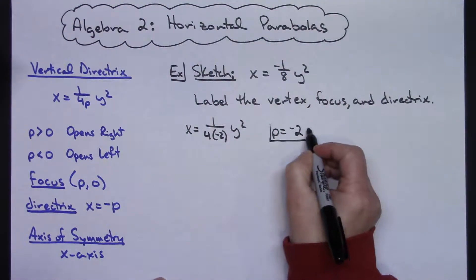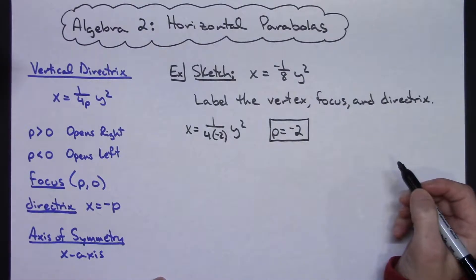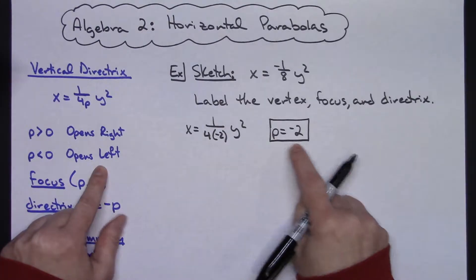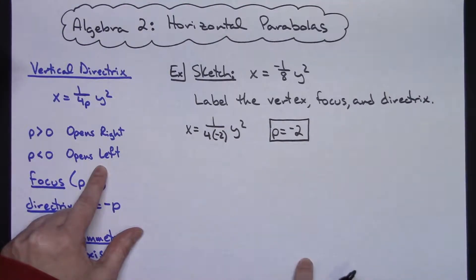That's going to be crucial in like everything that we do. So with p being negative 2, when p is less than 0, it opens to the left. So I know my parabola will open to the left.